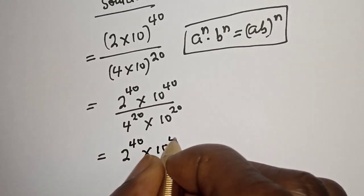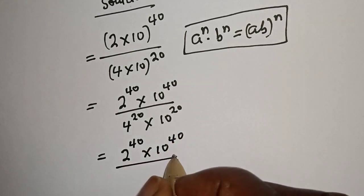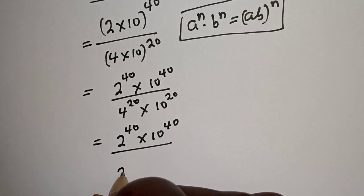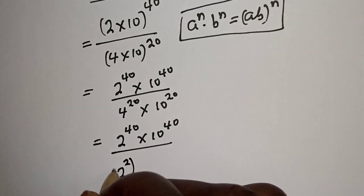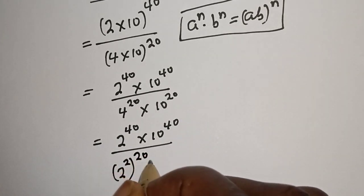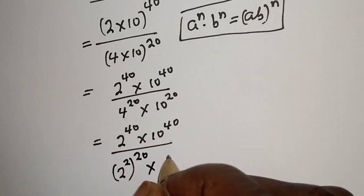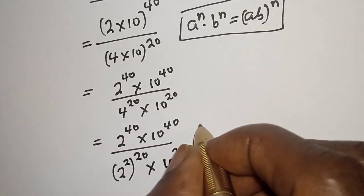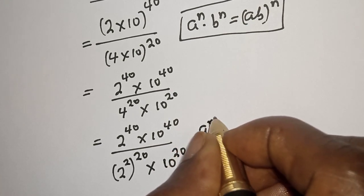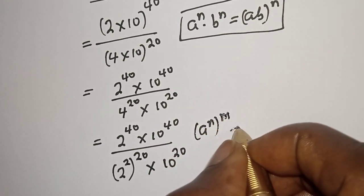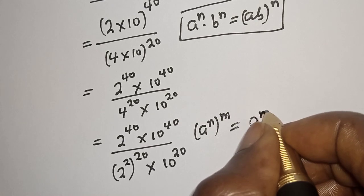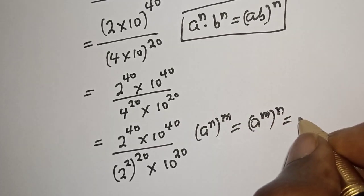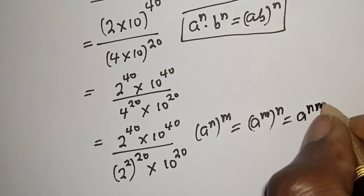4 raised to power 20 can be written as 2 squared raised to power 20. Also take note of this rule: if you have a raised to power n to the power of m, this is equal to a raised to power n·m.